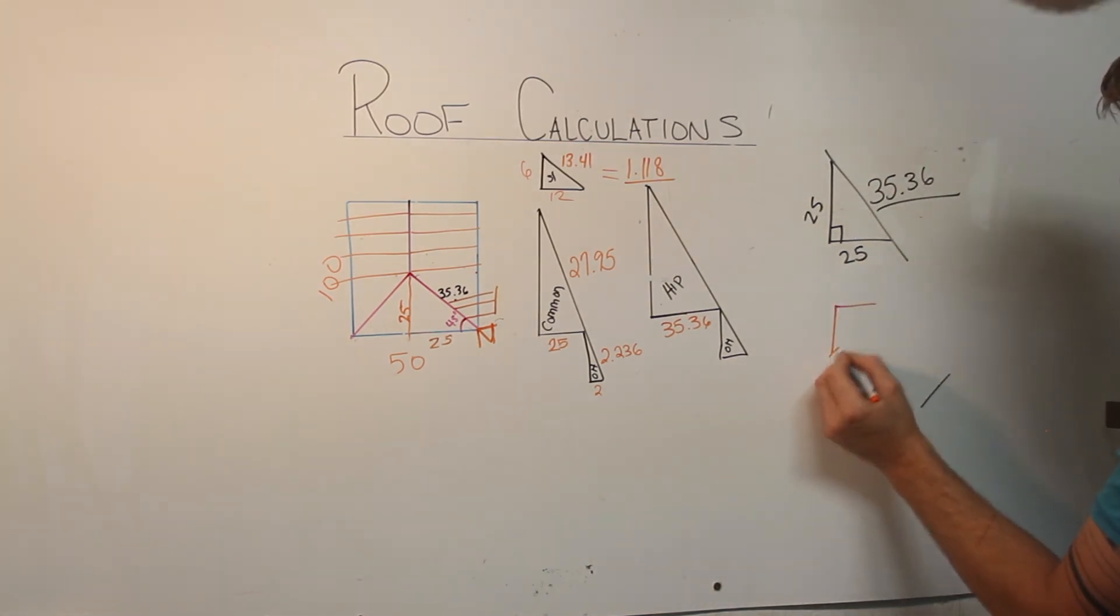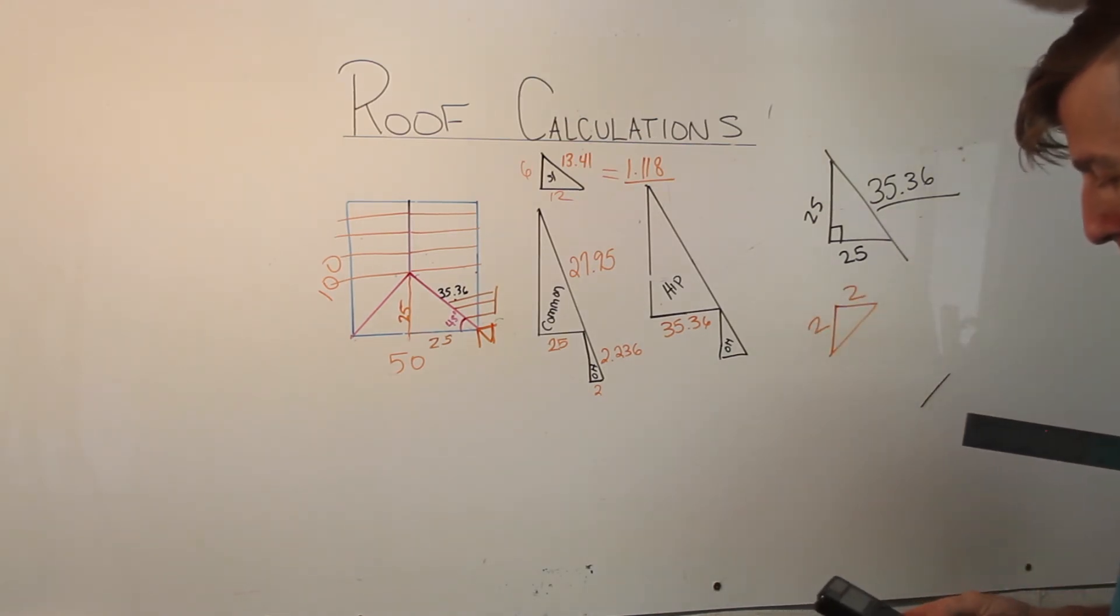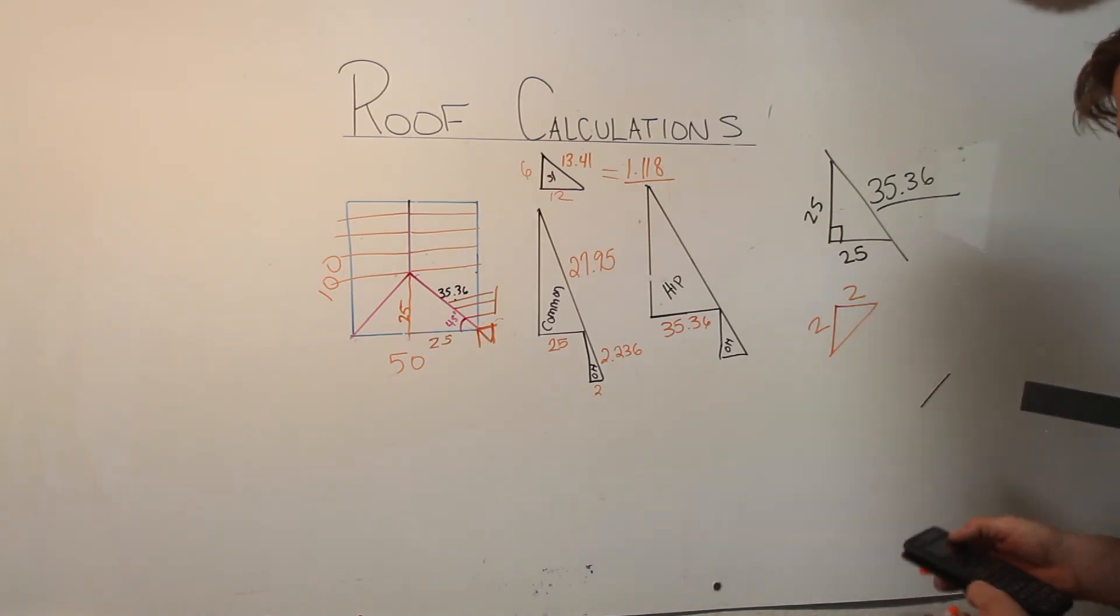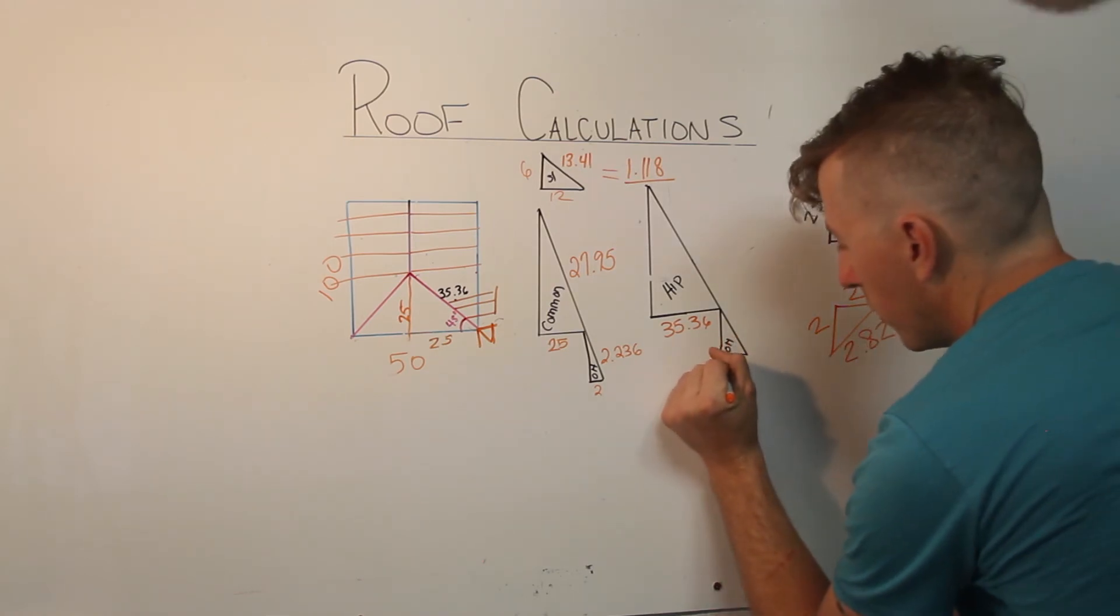We can build another triangle here. Two feet. Two feet. Two foot squared plus two foot squared equals eight. Square root of eight is 2.82.